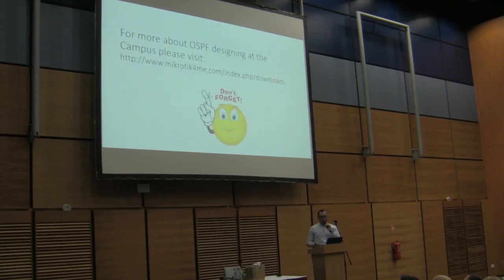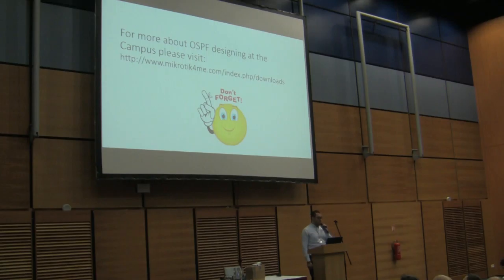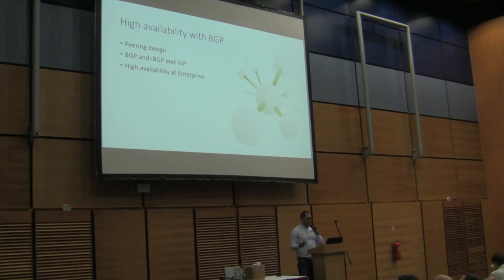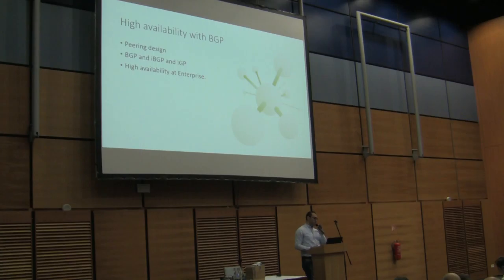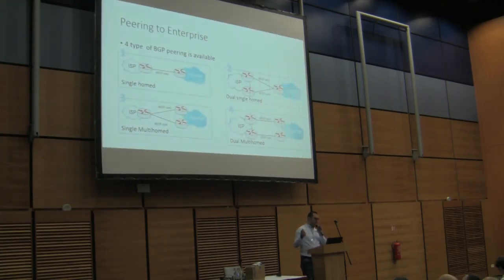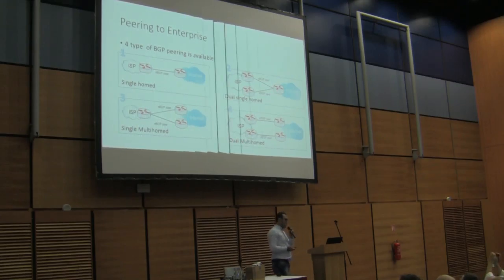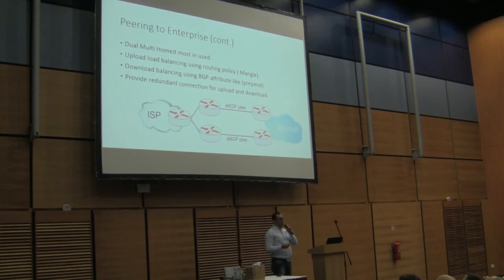For more details on how to configure an optimum OSPF network, you can access our website, which has a full configuration and explanation. Regarding BGP: we know there are four typical designs for BGP peering — single-homed, multi-homed, dual single-homed, and dual multi-homed. The most common is dual multi-homed, which provides the highest quality. This allows both upload and download sharing, providing better redundancy.